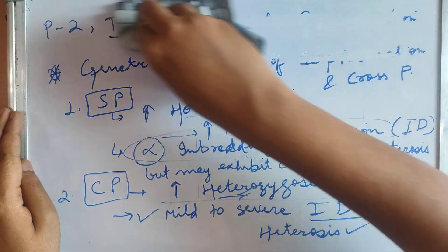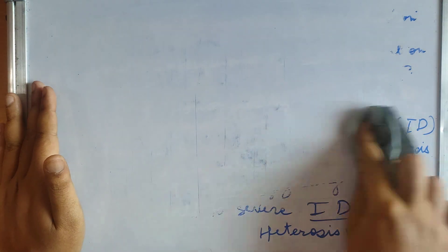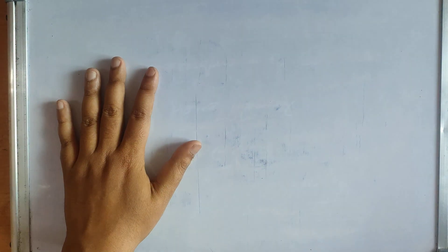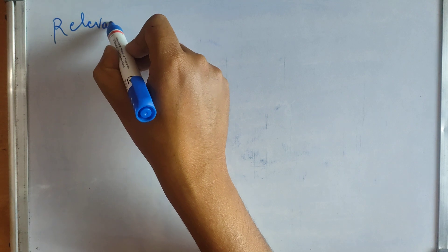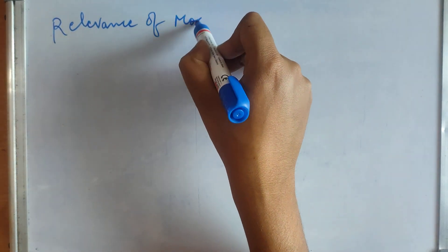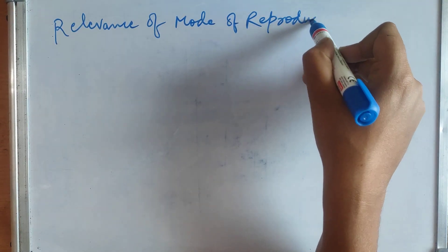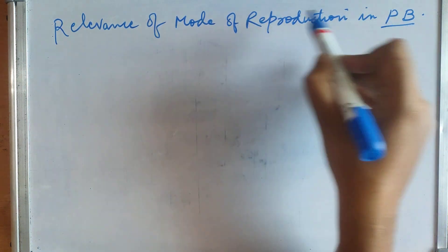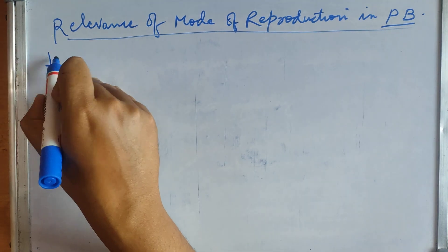Moving on, we will now discuss the relevance of mode of reproduction in plant breeding. There are several key points to cover here.